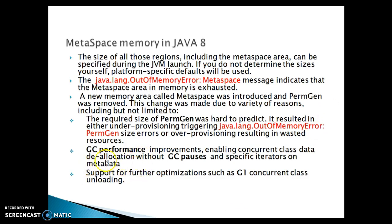The second reason was to remove PermGen garbage collector performance improvements, enabling concurrent class data allocation without GC pauses and specific iterators on the metadata. The third reason was to support further optimizations such as G1 concurrent class unloading — G1 is one of the garbage collectors responsible for unloading classes from memory.